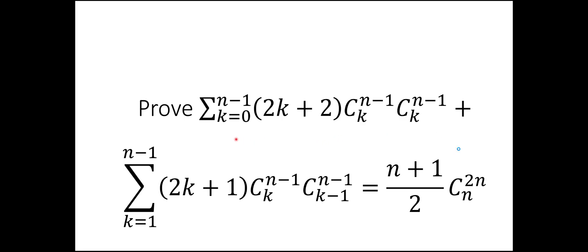The problem is to show or to prove that this summation — 2k plus 2 times C(n-1, k) squared, where C means combinatorial — because these two are the same, plus the other term C(n-1, k) times C(n-1, k-1) — is equal to (n+2)(n+1) divided by 2, times C(2n, n).